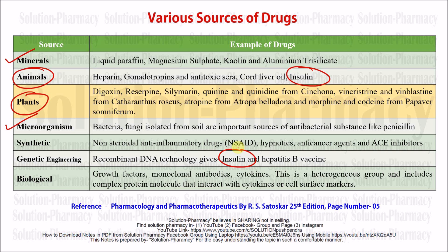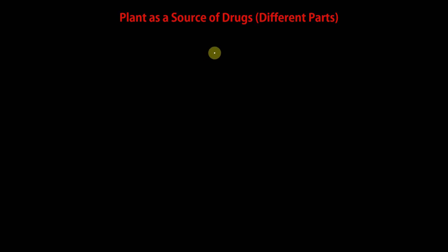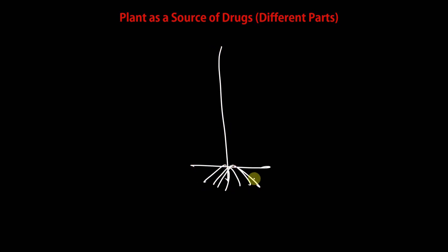Now let's look at the plant as a main source of drug in more detail using a diagram. Any plant has many sub-parts. The root is one part — examples of drugs obtained from roots include ashwagandha and shatavari, which are very important for vital bodily activities and are used for their regenerative properties.